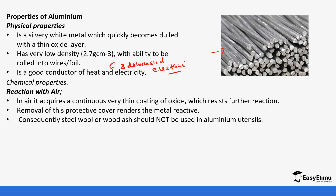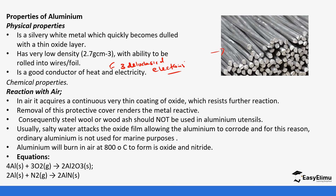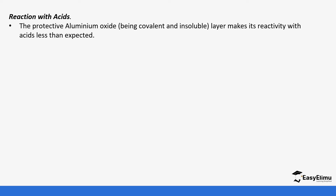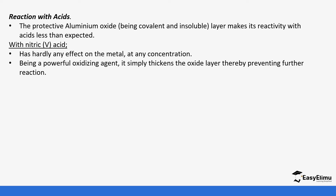For chemical reactions to occur with aluminium, the oxide layer needs to be removed. Steel wool or wood ash should not be used with aluminium because salty water attacks the oxide film, allowing aluminium to corrode — which is why aluminium is not used for marine purposes. Aluminium burns in air to form its oxide and nitride, reacting with both oxygen and nitrogen. This only happens when the coating is removed and at very high temperatures. When reacted with nitric acid, there is no effect at any concentration because nitric acid thickens the oxide layer and prevents further reaction.